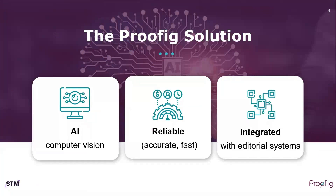This is why we developed Proofig — a tool that allows editors to streamline image integrity checks during the submission process. It uses computer vision and AI to scan images and detect potential issues. Proofig delivers an accurate and fast report in minutes, and can also be integrated into your editorial systems.